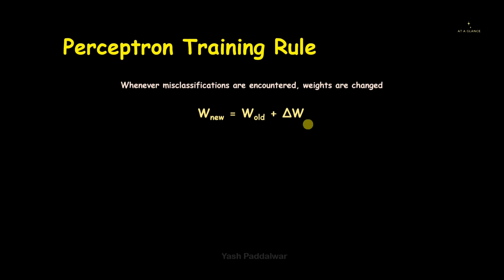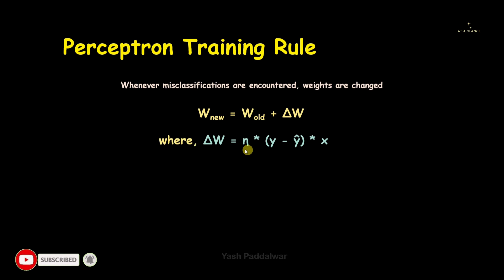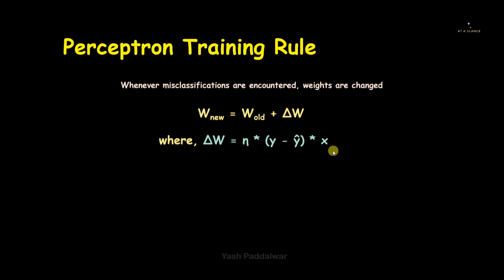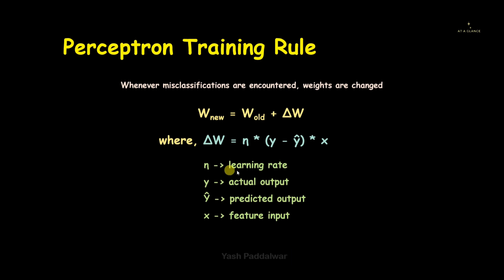Now what exactly is delta W? Delta W is represented as eta — a Greek letter — multiplied by (y minus y_hat) multiplied by x. There are a few unfamiliar terms here: eta is nothing but the learning rate, y is the actual output, y_hat is the predicted output, and x is the feature input that we have already seen in examples from previous videos.